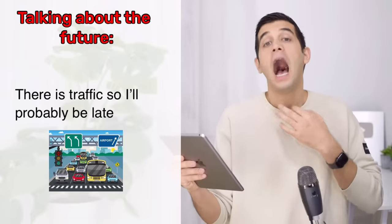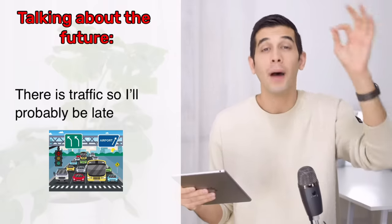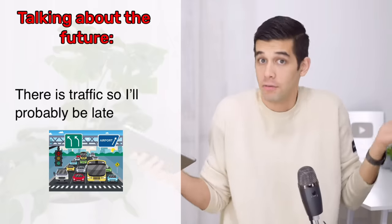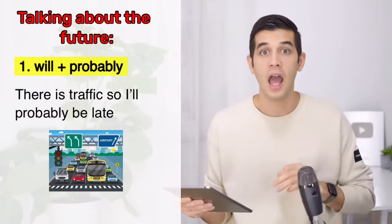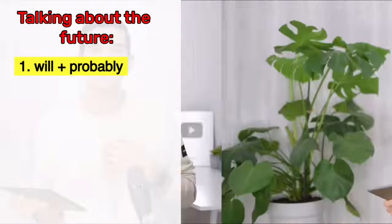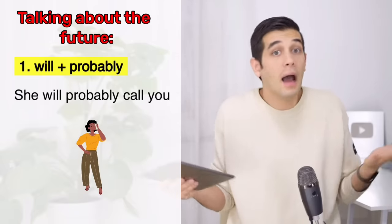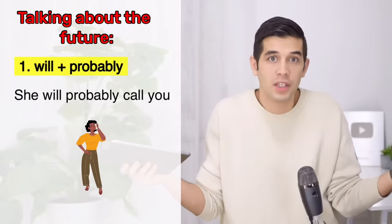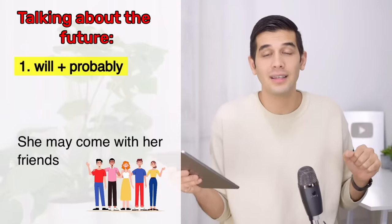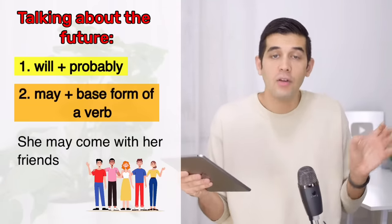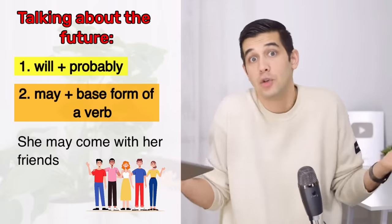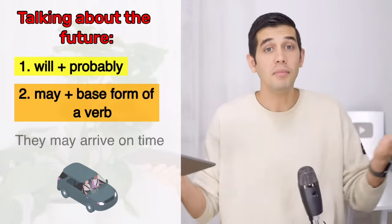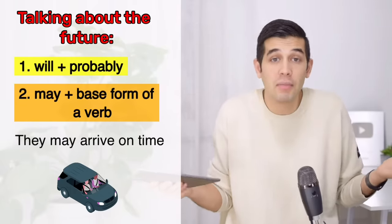One of the ways to talk about possible future events is to use will plus probably: 'I will probably be late,' 'she will probably call you' — I'm not sure, maybe she will, maybe she won't. Another way to talk about future possibilities is to use the modal verb may with the base form of a verb: 'she may come with her friends,' 'they may arrive on time' — maybe they will, maybe they won't.